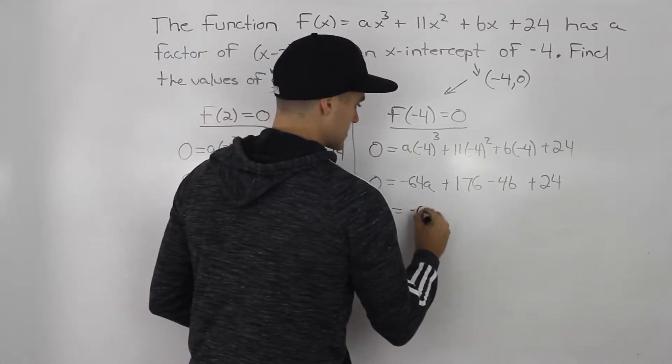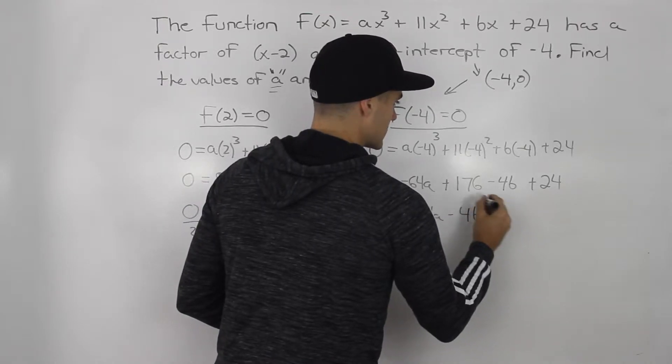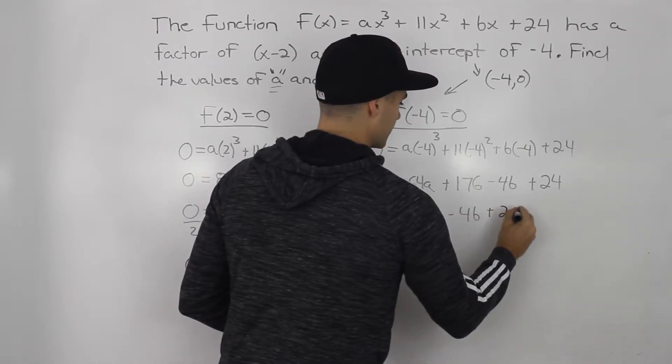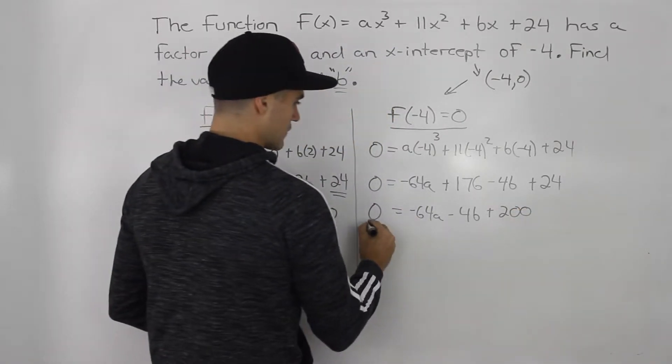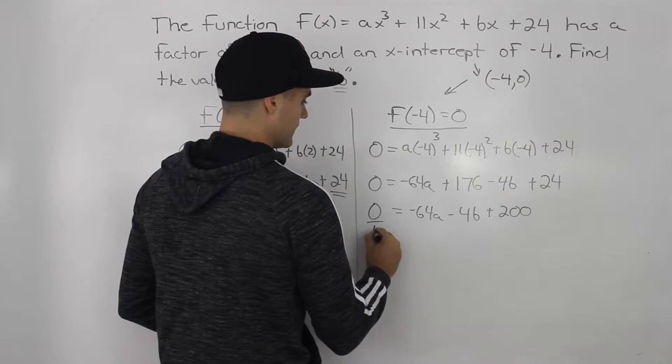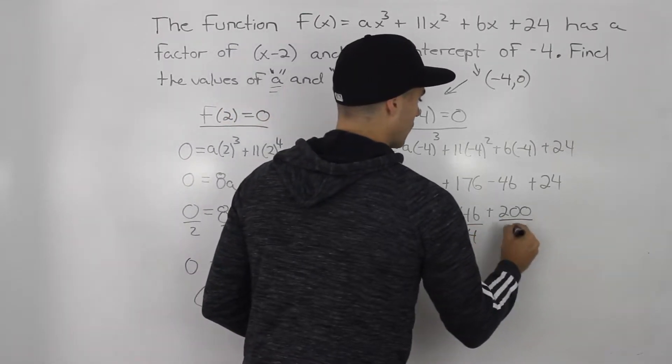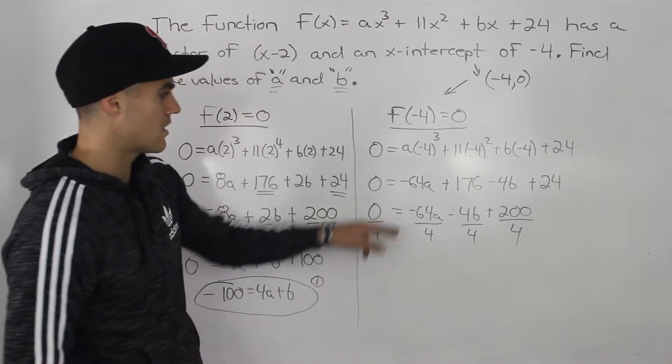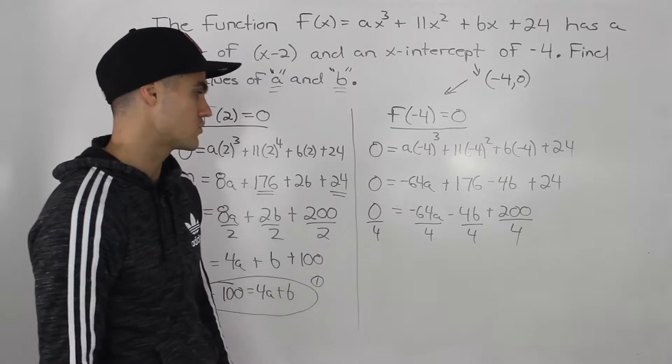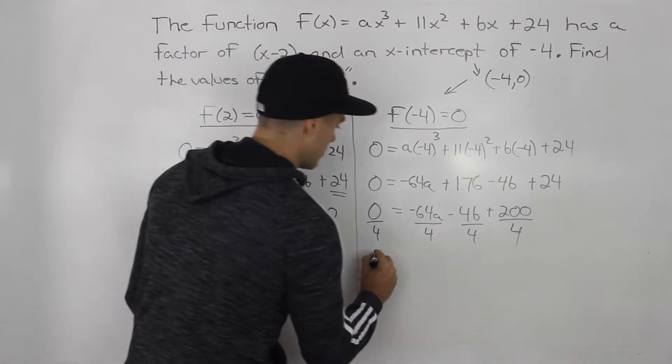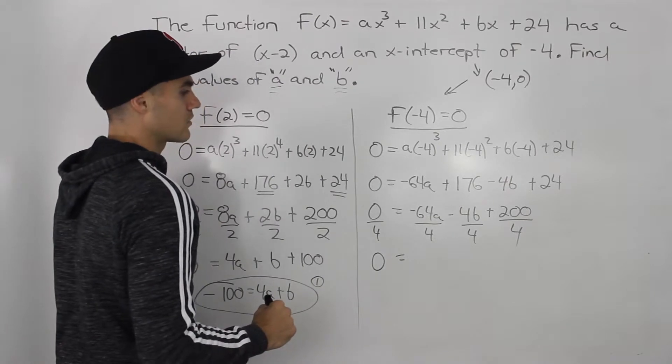So simplifying it like we did here, we got negative 64a minus 4b. And then this will be 200. And then let's divide everything by 4. Simplify it a little further. Now, you're not always going to be able to simplify this. But notice how each of these expressions can be divided by 4 smoothly. So if that can happen, you always want to try to simplify it a little further.